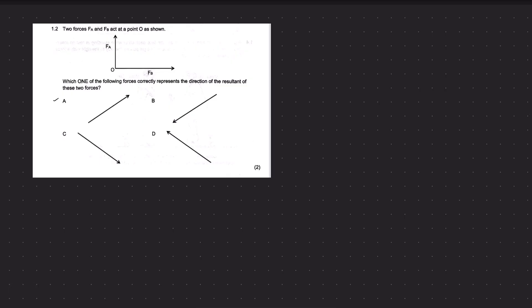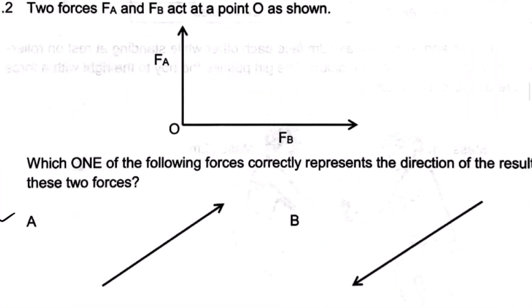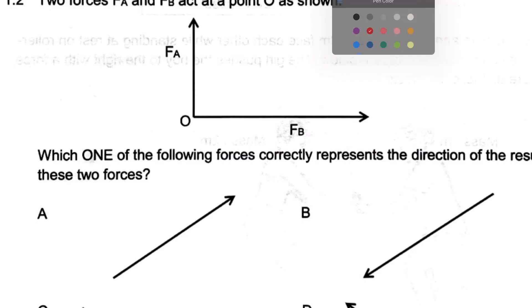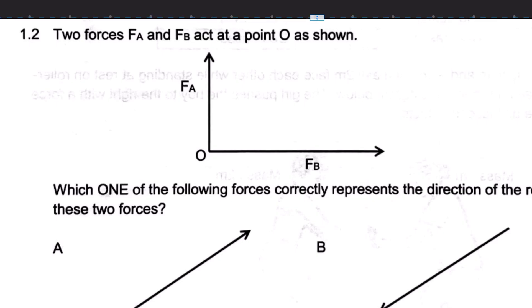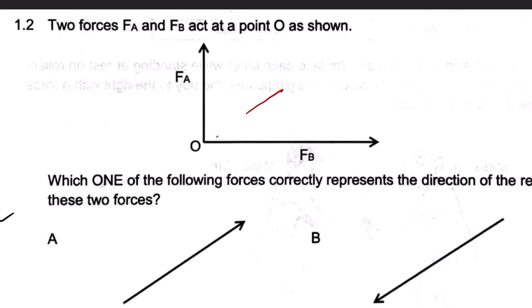Question 1.2: two forces FA and FB act at the point O as shown. Which one of the following forces correctly represents the direction of the resultant of these two forces? It's important to remember that if you have two forces, the resultant will be in the quadrant between the two forces. So the resultant for FA and FB will be here — the answer is A.